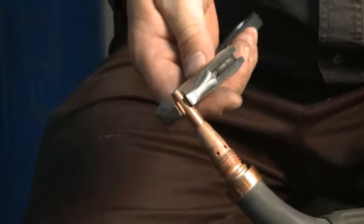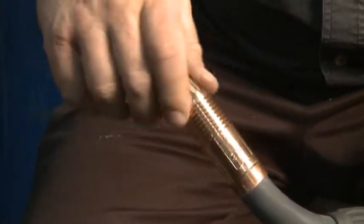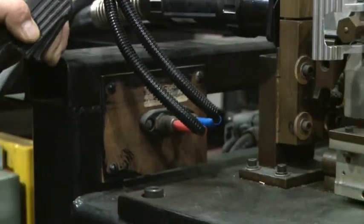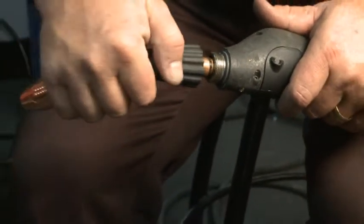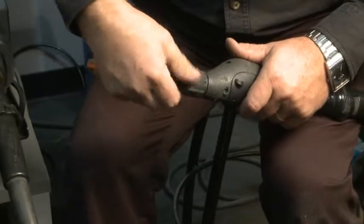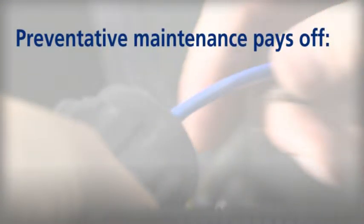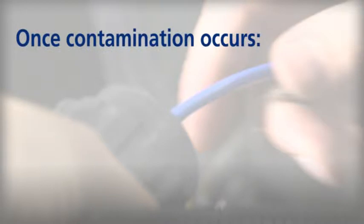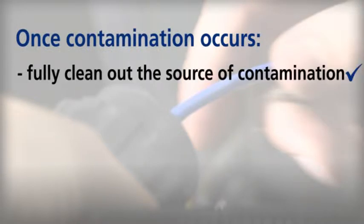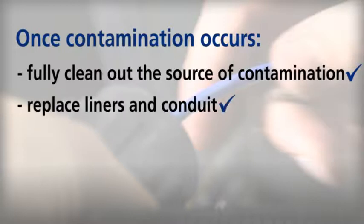Nozzles have insulators in them and over time they break down, creating a venturi that sucks air through the gap in the insulator. Wire feeders with water cooling systems need to be properly maintained — O-rings need to be changed regularly and lubricated so that moisture doesn't get around connections and into the gun. This preventative maintenance will pay off in the long run because polluting the inside of a gun by drawing moisture into it means it's contaminated until you can clean it out. When you find a source of hydrogen in the feed path, it's necessary to fully clean out the source. In the case of liners and conduits, you'll probably have to replace them rather than clean them.